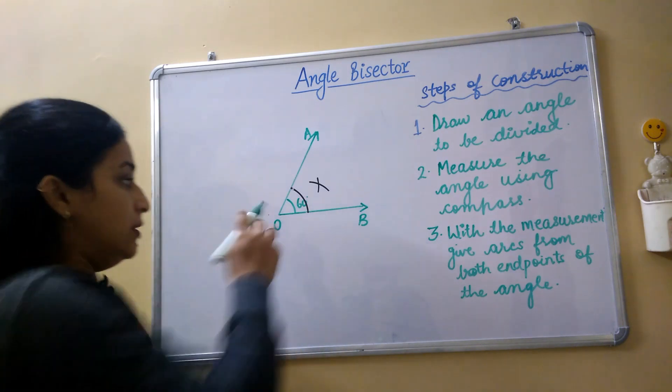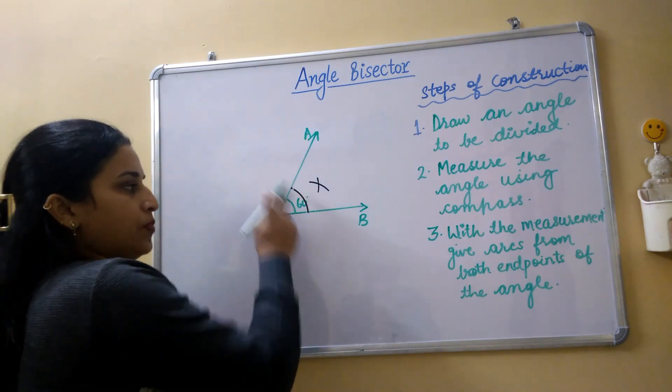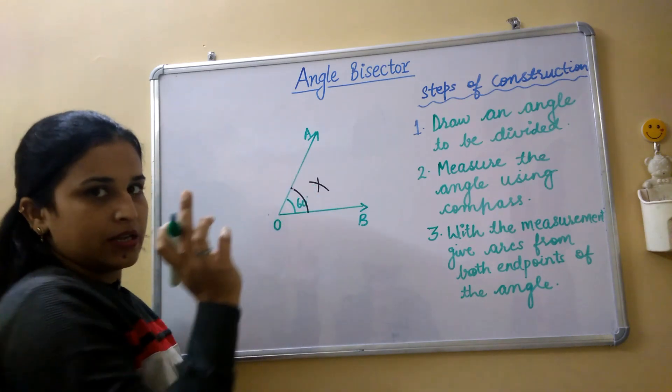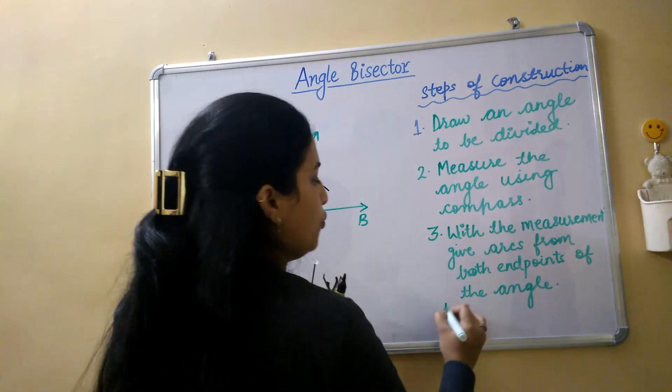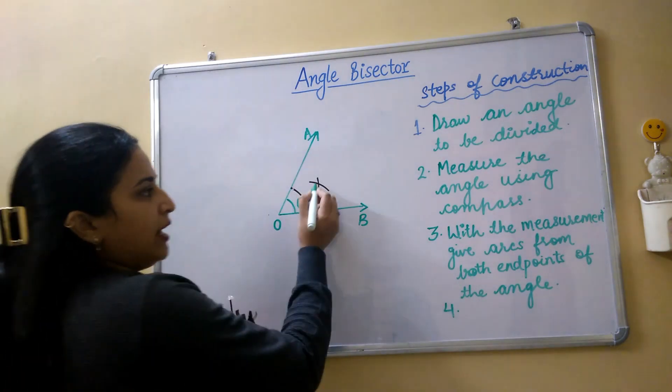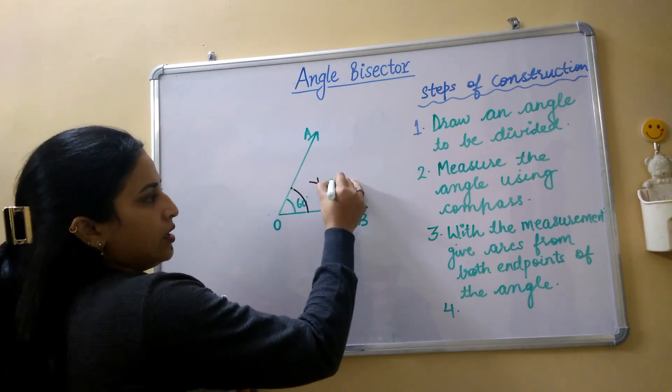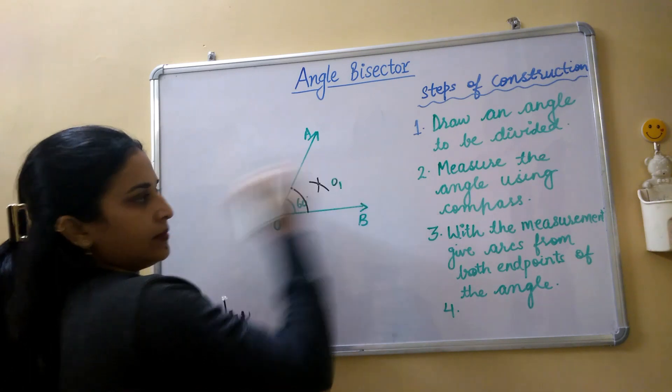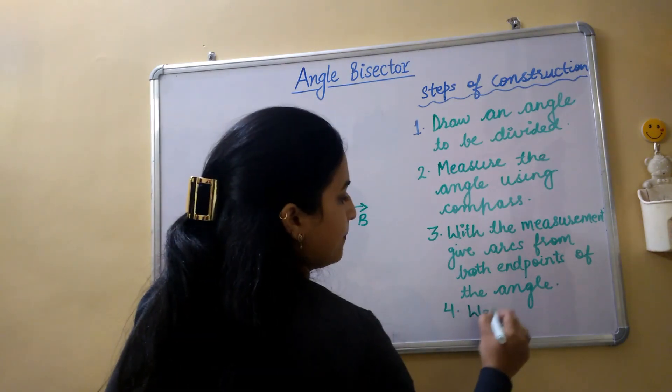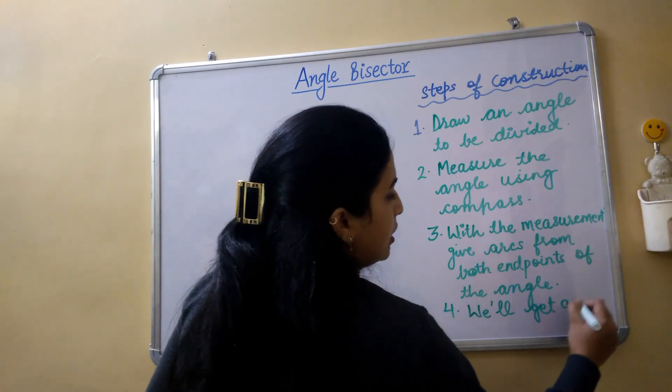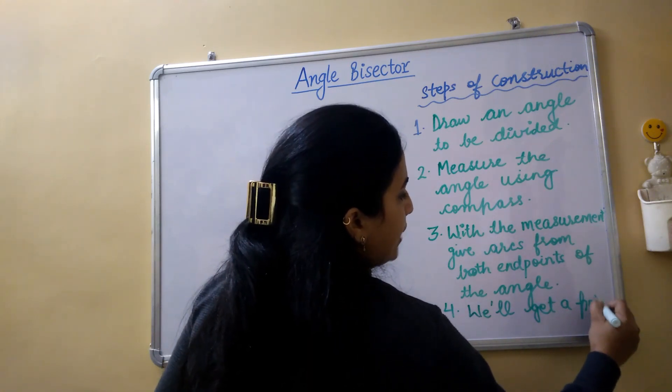The same we have done with the endpoints of the angle. We have given arcs. Fourth point will be, we will get a point O1. We will get a point O1.